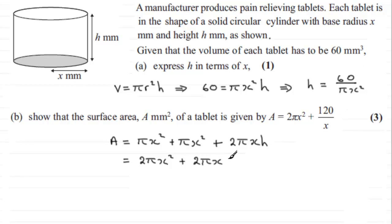And now we can simplify this term because in this term that π cancels with that π, and this x here cancels with one of the x's in the x².